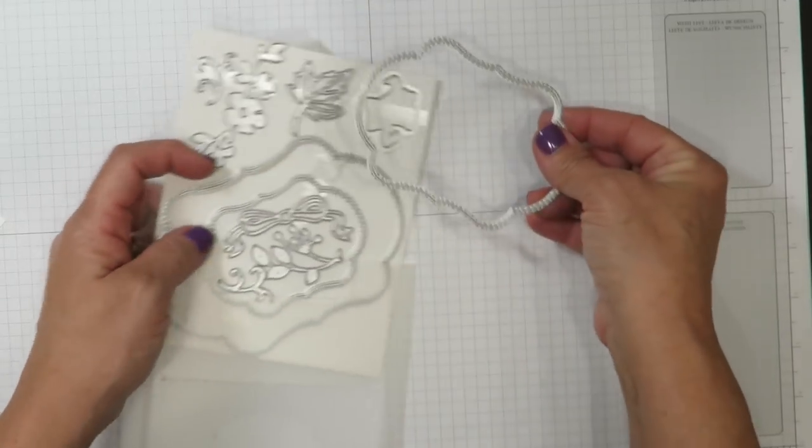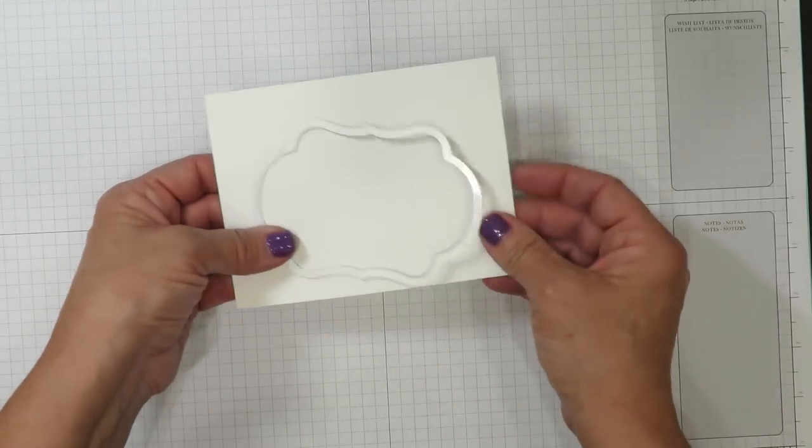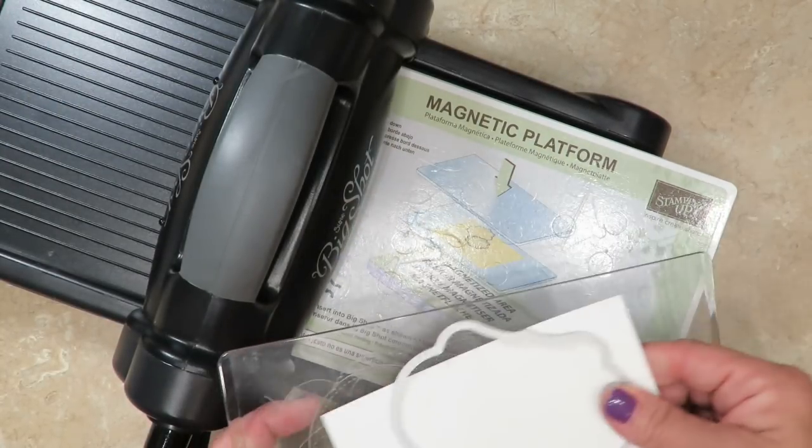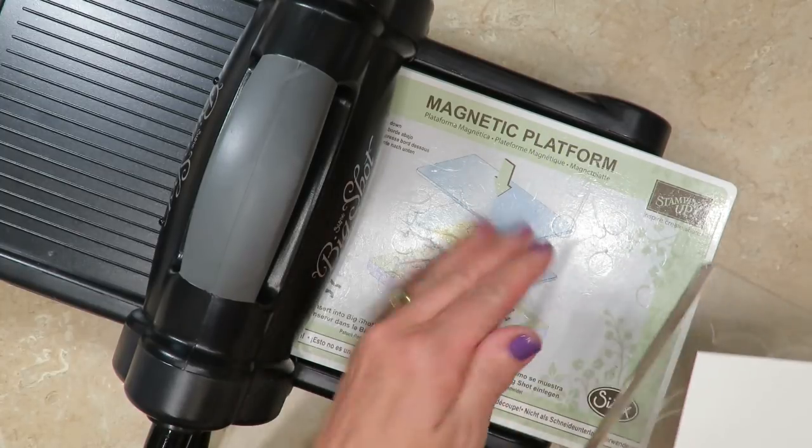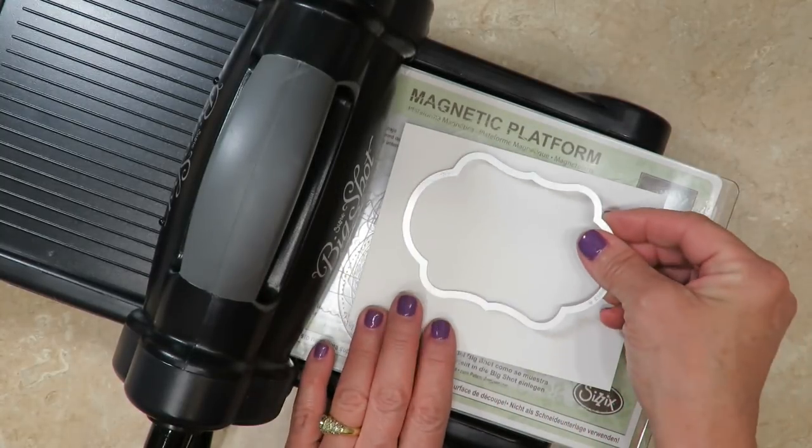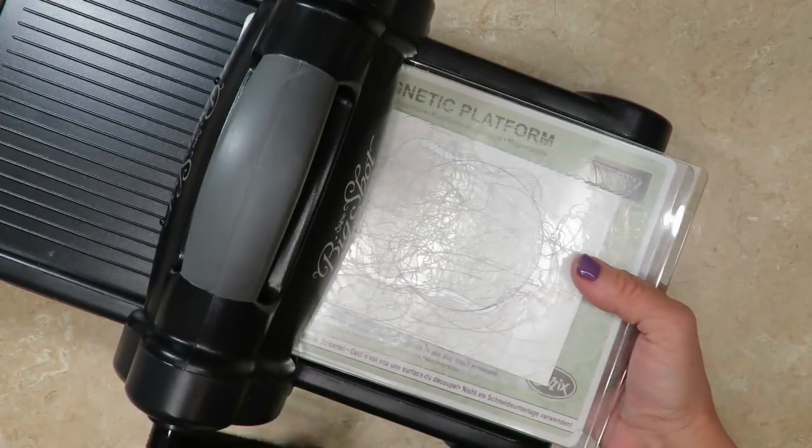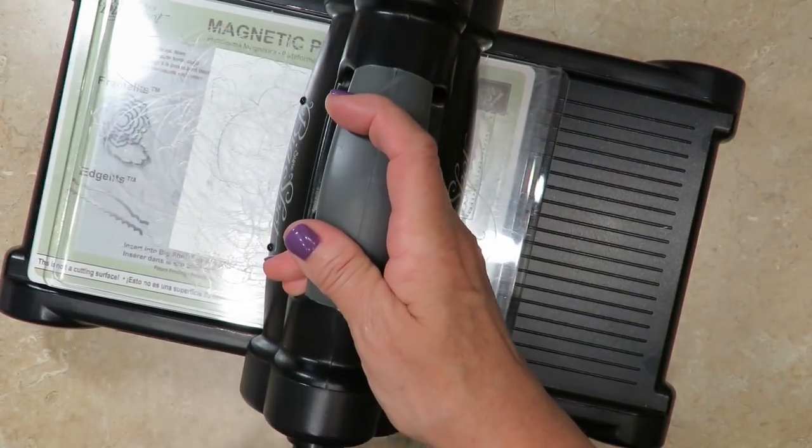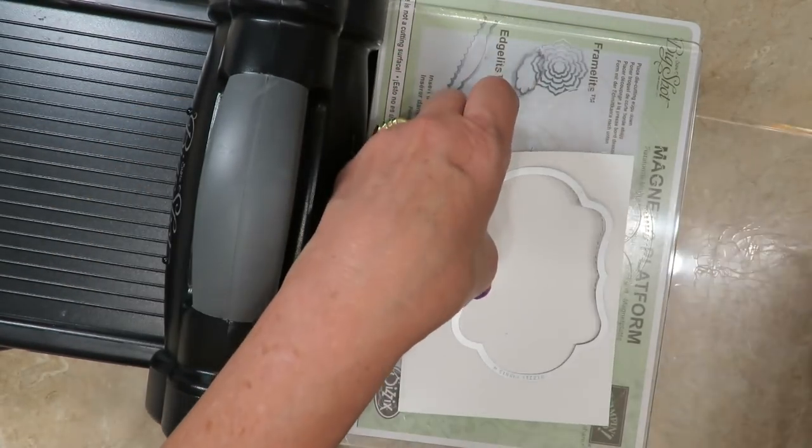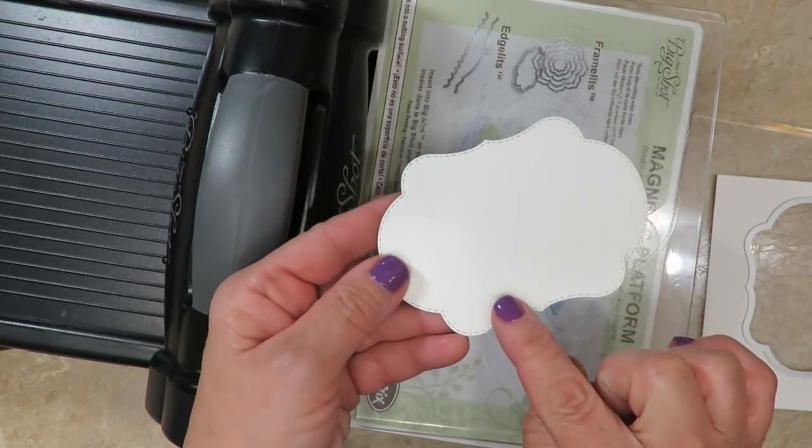I'm choosing to use the middle size framelit that's inside this package and I've got a scrap piece of Whisper White cardstock here and I'm going to die cut this frame. I've got my magnetic platform here which is my platform of choice when I'm using framelits. That magnetic surface really helps to hold them in place and to protect it I'm going to use one of the clear cutting mats. Then I'll place my cardstock and that die and put another clear mat over the top and crank this through. The one reason I am in love with these framelits is because they provide a beautiful stitched frame all the way around.